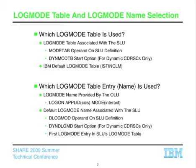The first question is: which log mode table do we use? VTAM has always done this the same way in every release. The log mode table associated with the secondary LU is always the log mode table used to look up log mode names. You code that using the MODETAB operand on the SLU definition, such as an LU, APPL, or CDRC definition. We also have a DYNMODETAB start option so that dynamically created CDRCs can inherit a table other than the default log mode table.